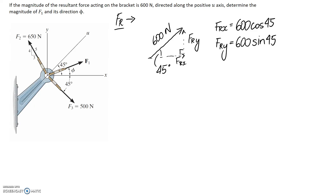We also need to consider whether the components are in the positive or negative directions. FRx is pointing in the positive x direction, and FRy is pointing in the positive y direction, so both go into the equation as positive. Now let's move on to summing the forces, knowing that the sum of forces in the x direction must give us the resultant force in the x direction.